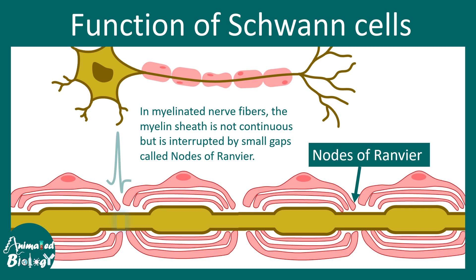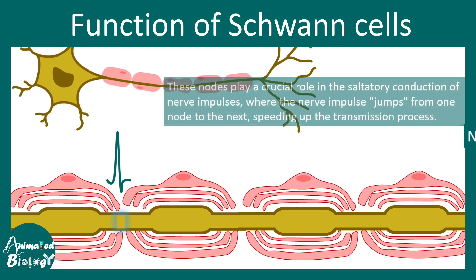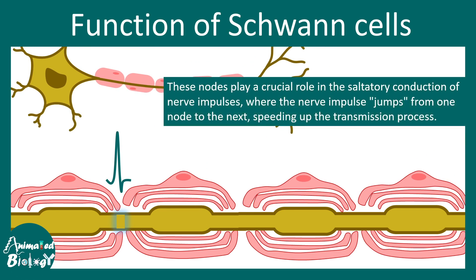Due to these nodes of Ranvier, the action potential can literally jump from one node to another node. This mode of transmission is known as saltatory transmission of action potential, which further accelerates the nerve conduction, and this is only possible thanks to the Schwann cells.